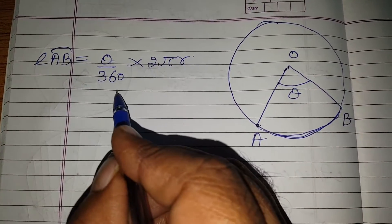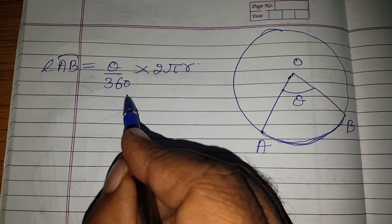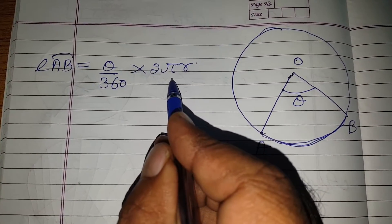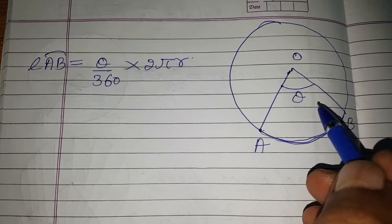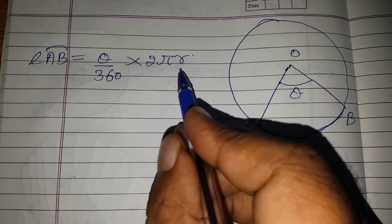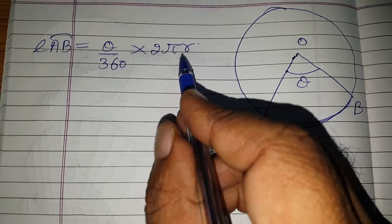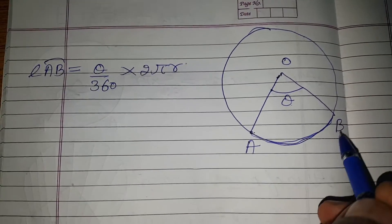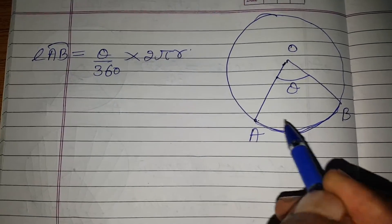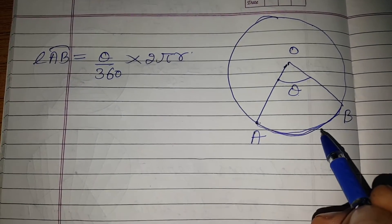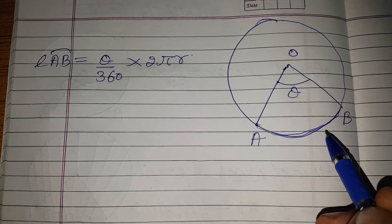The formula for the length of arc is: length equals theta by 360 into 2 pi r. You need theta and r to find this length.